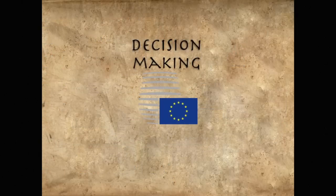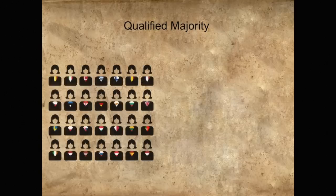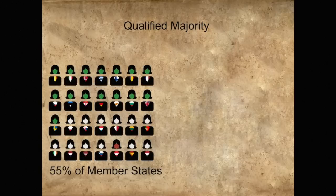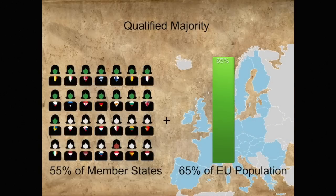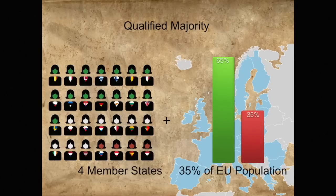The Council makes decisions by qualified majority, which means that to make a decision, it must be supported by the Ministers of 55% of the countries, representing at least 65% of the EU's population. But this qualified majority can't force its will on a protesting minority. Four countries, representing at least 35% of the population, can block a decision by voting against it.